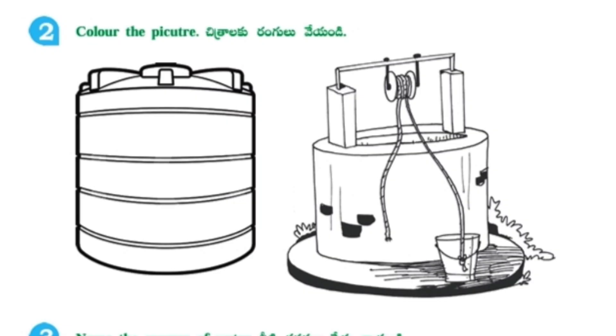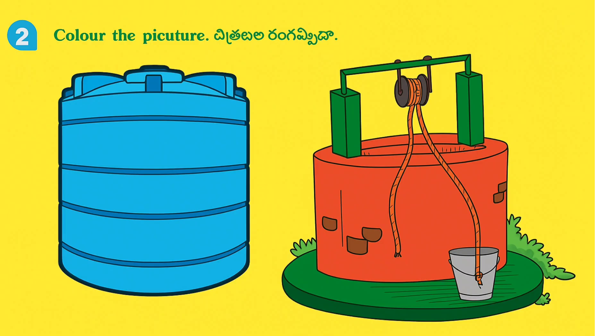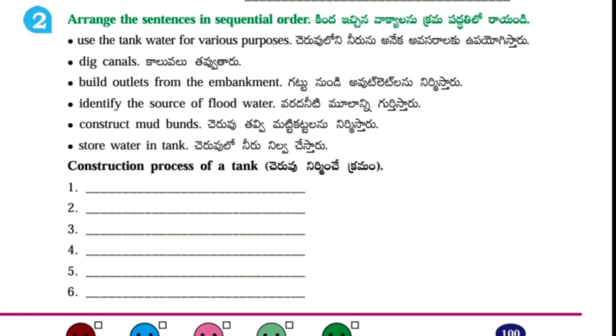Second one: Color the picture. Here I have given the picture with colors. Next, third one: Arrange the sentences in sequential order.